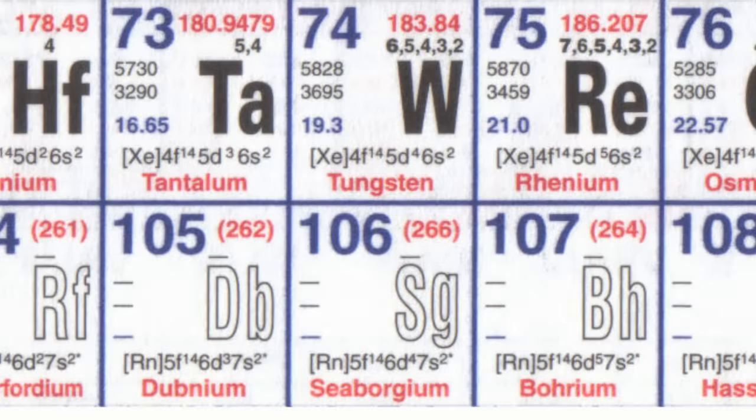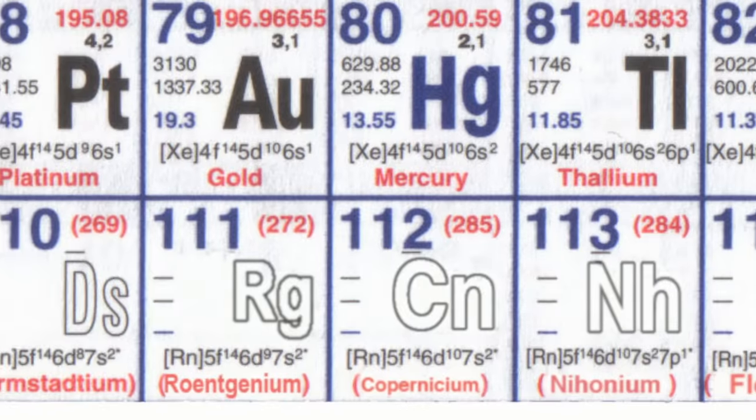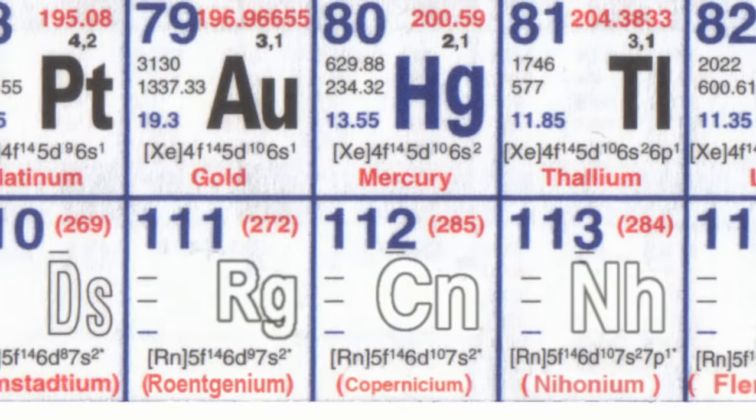Of course, tungsten is above seaborgium in the periodic table, and mercury is above copernicium. So, it's quite an interesting question which will never be solved because only tiny amounts of these elements have ever been made, is whether seaborgium would float or sink in a bath of copernicium.